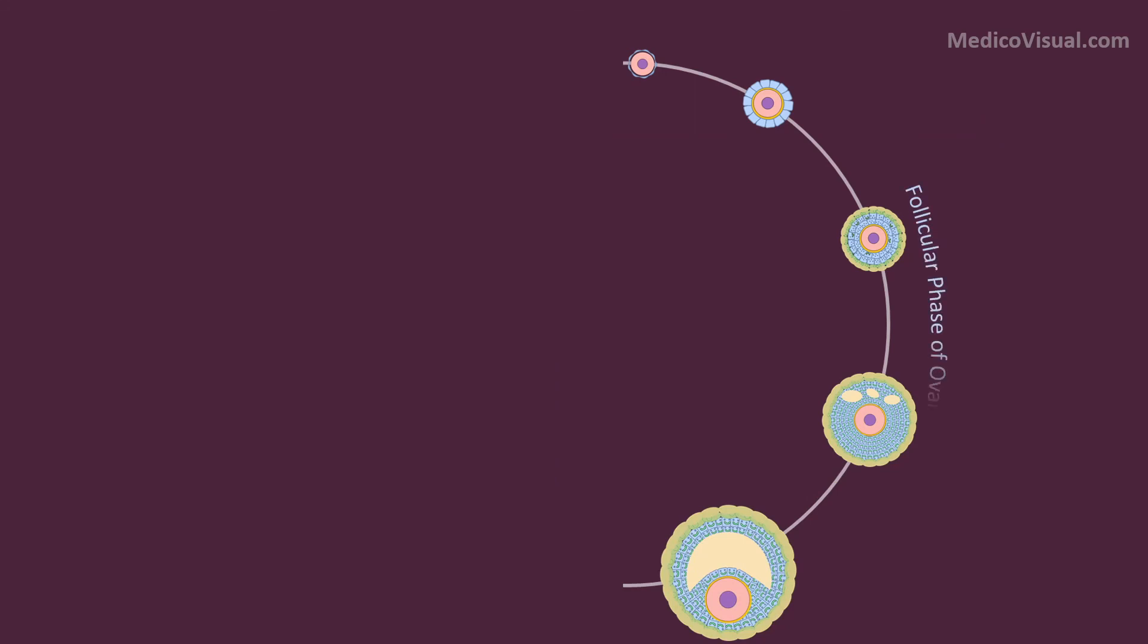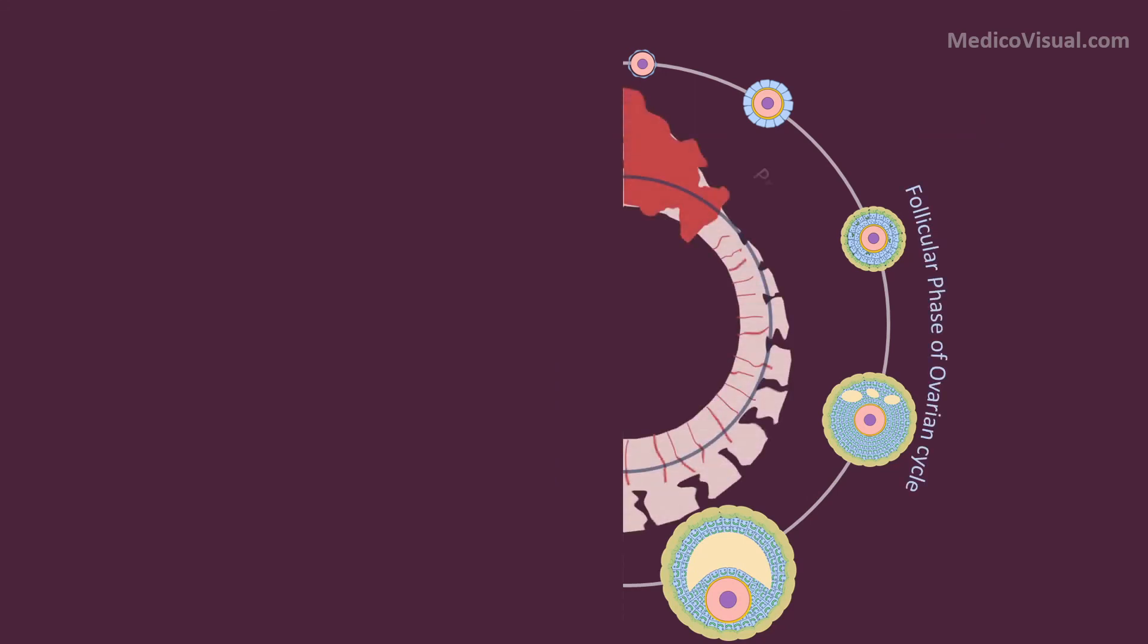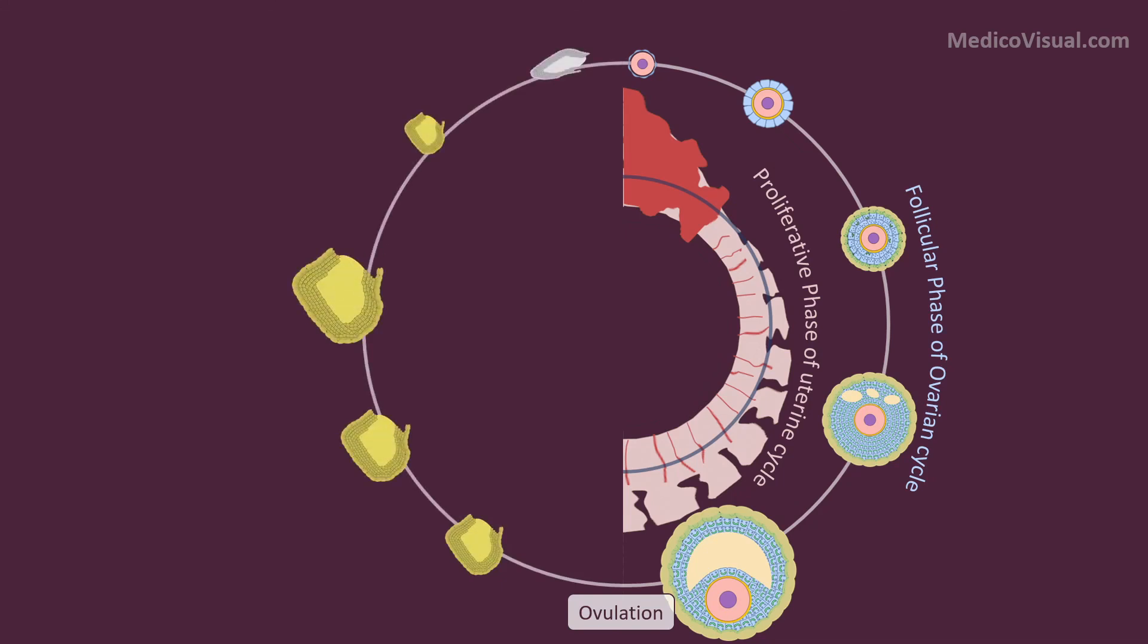There is the follicular phase of the ovarian cycle, and the uterus is proliferating—that is the proliferative phase of the uterine cycle. Then ovulation will occur, corpus luteum will be formed, and that is the luteal phase of the ovarian cycle.